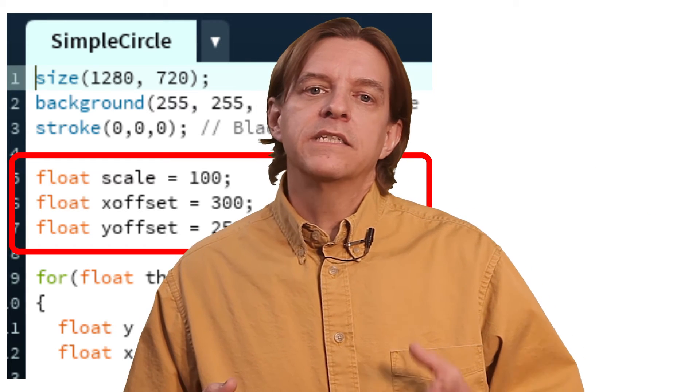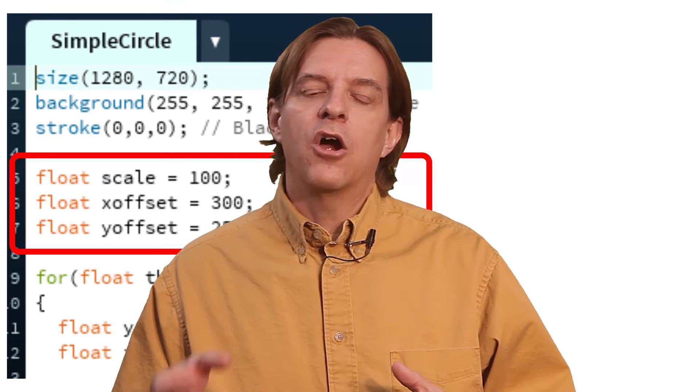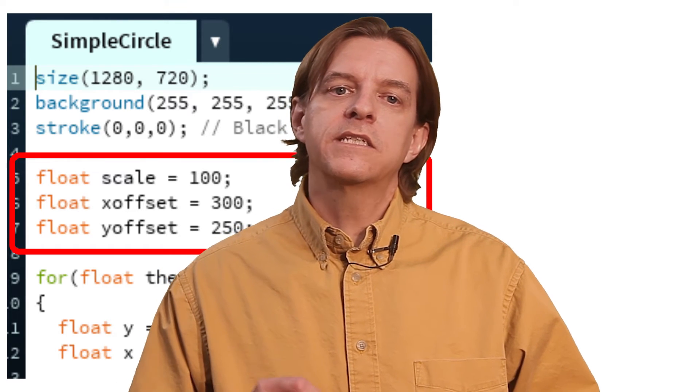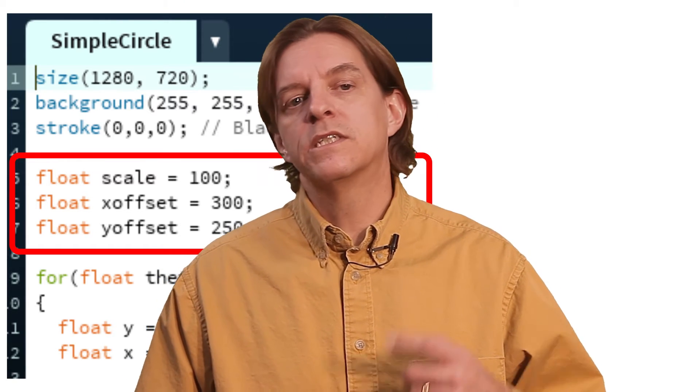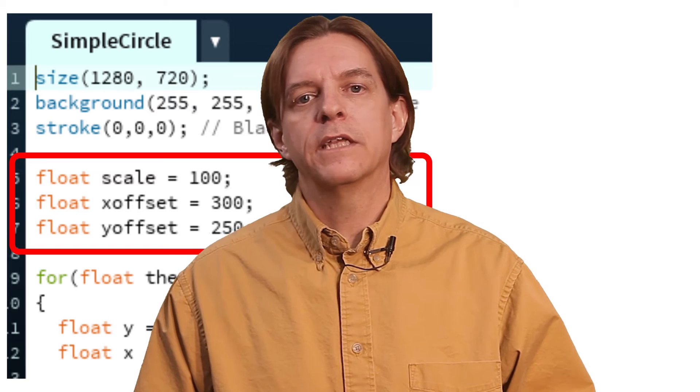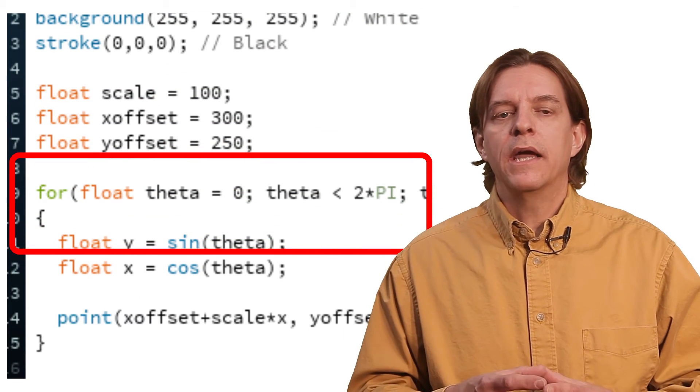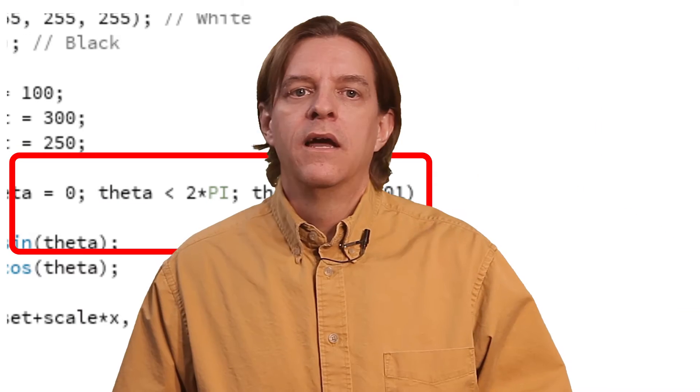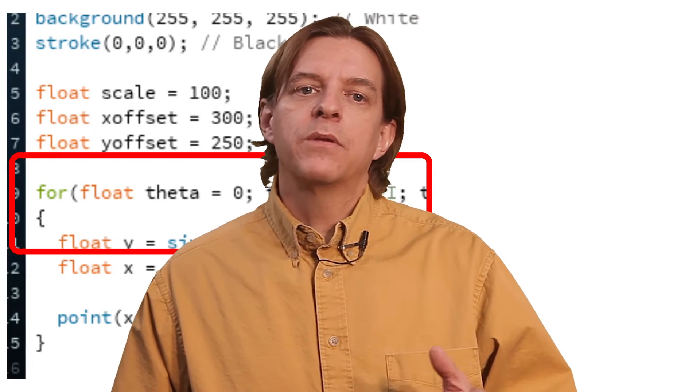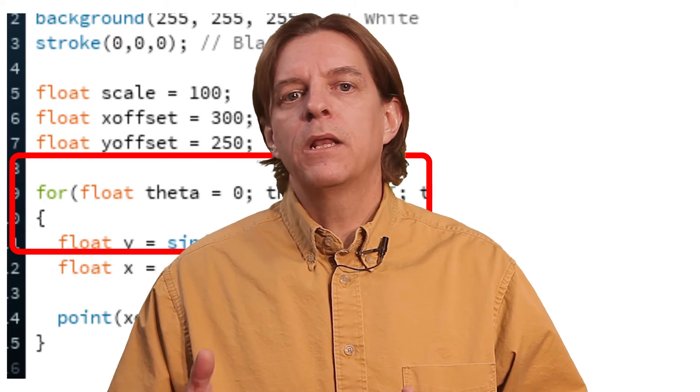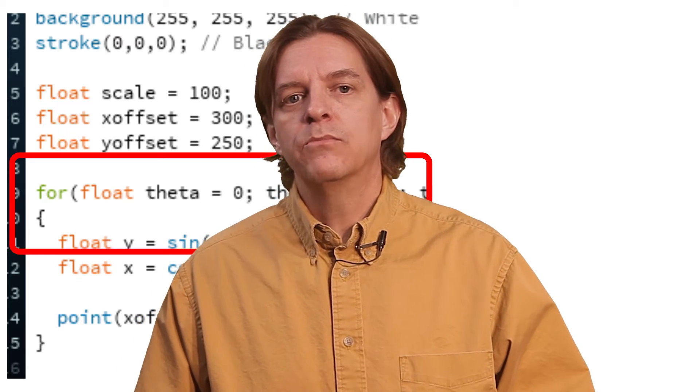These are needed because sine and cosine return values around the Cartesian origin. But the coordinate system of the processing screen is based with 0, 0 in the upper left corner of the canvas. Then we're going to define a loop from 0 to twice pi, going in small increments. We use twice pi here because in computers, cosine and sine typically use what are called radians instead of degrees as their inputs.